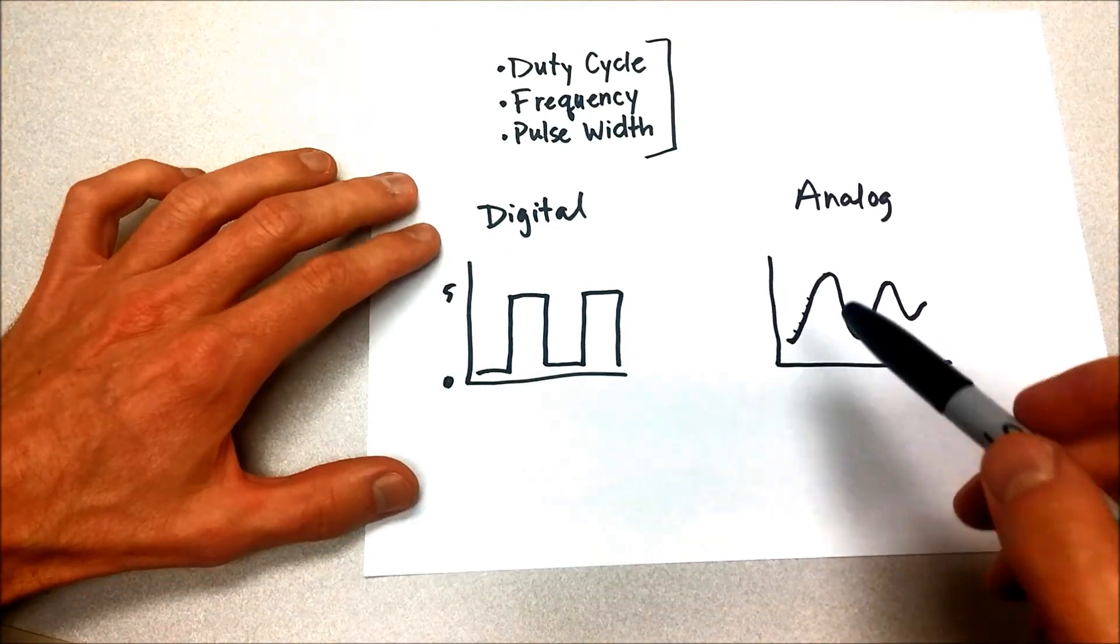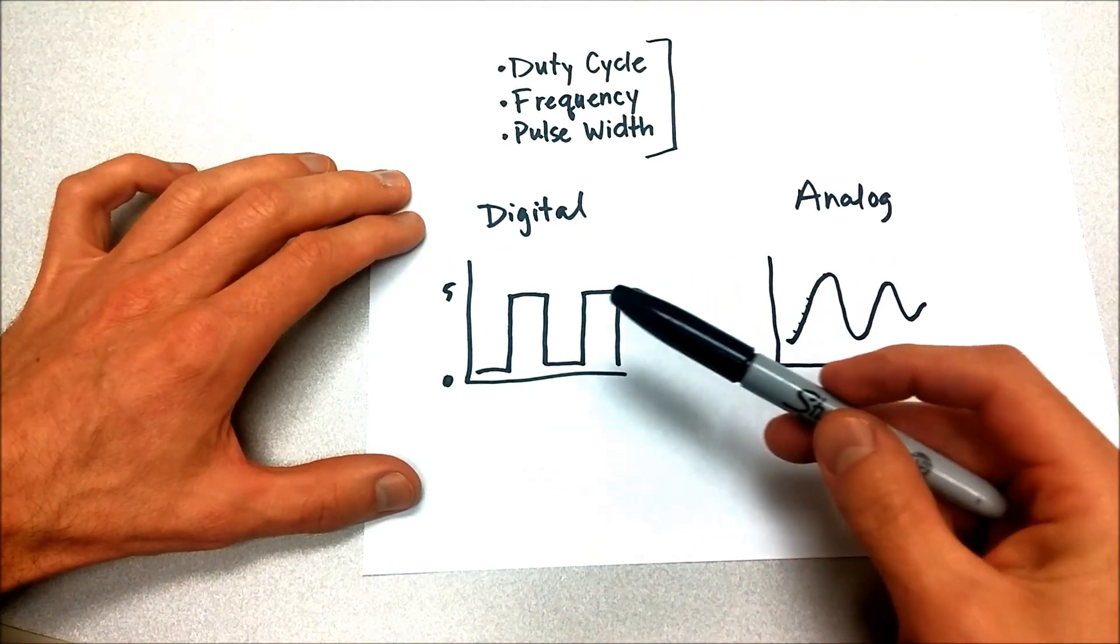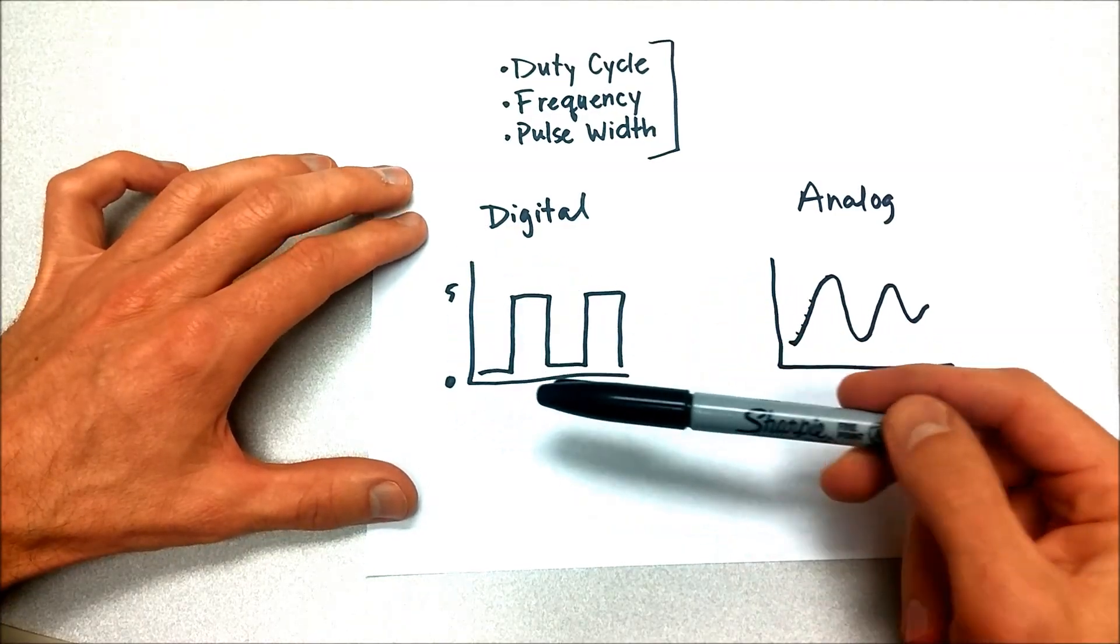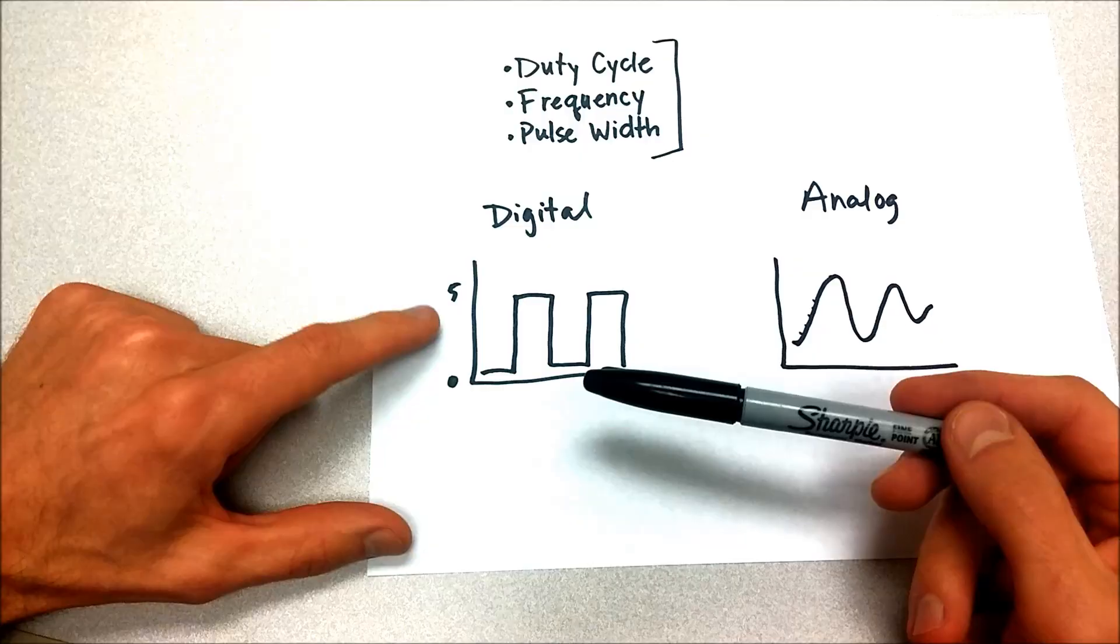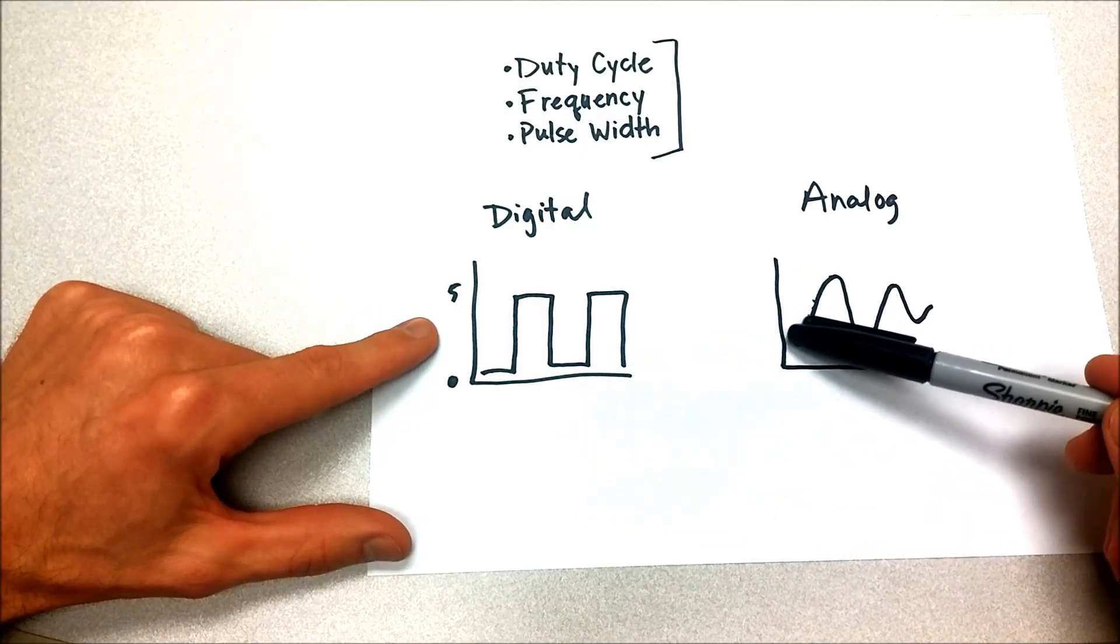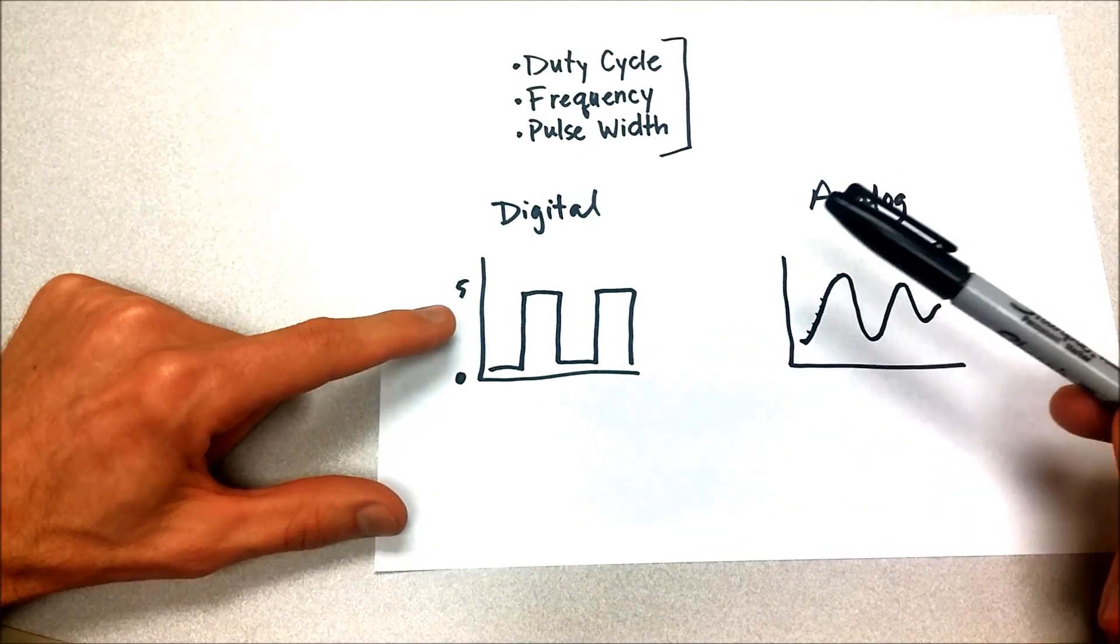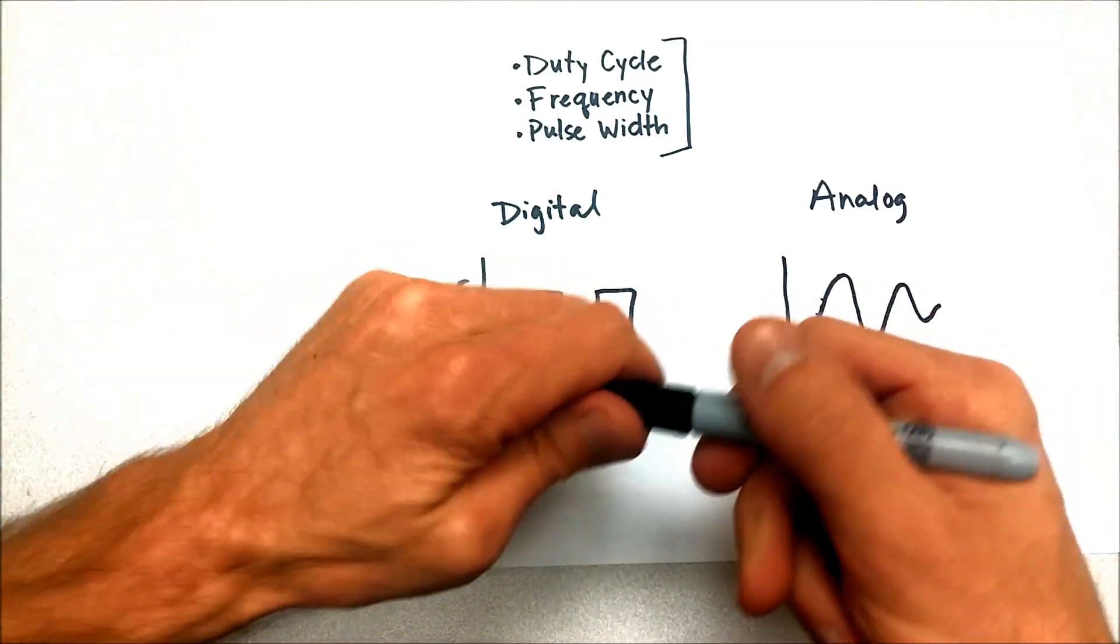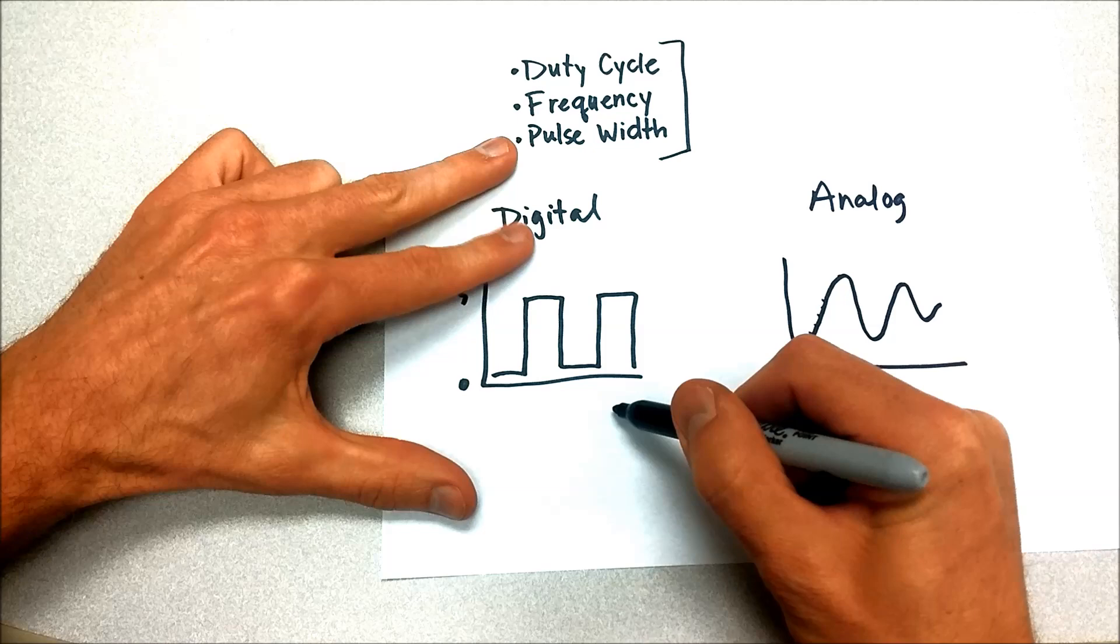So often we have an analog signal that needs to be converted to a digital signal. Whenever we're using a computer or a data acquisition device, we're collecting analog voltage measurements that vary, and they've got to be turned into some sort of a digital signal that the computer can recognize and interpret. So the way that works is like this.